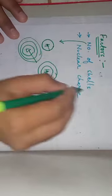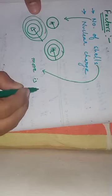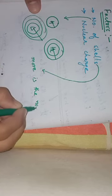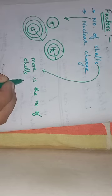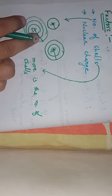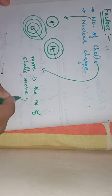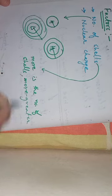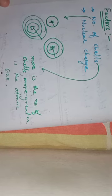So for number of shells: more is the number of shells, greater is the atomic size. Now let us talk about the second factor, that is nuclear charge.